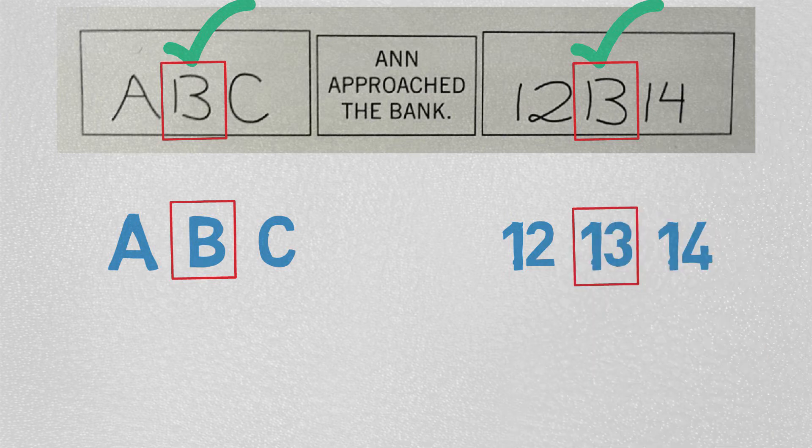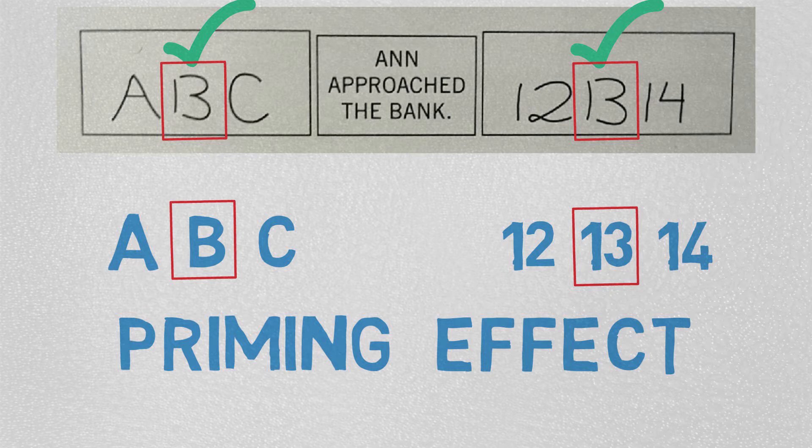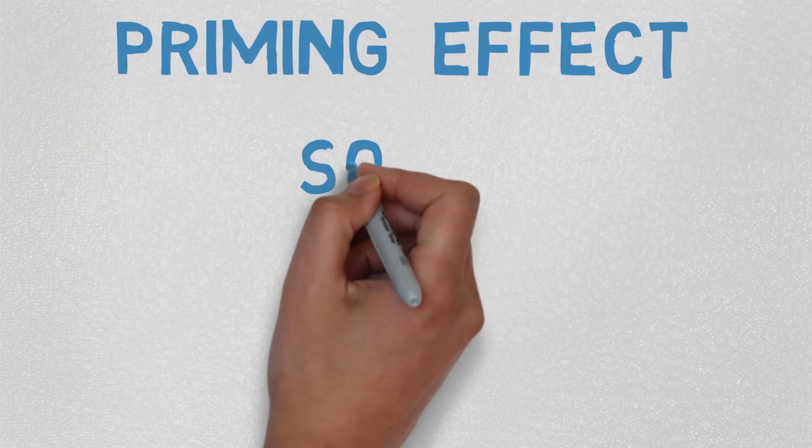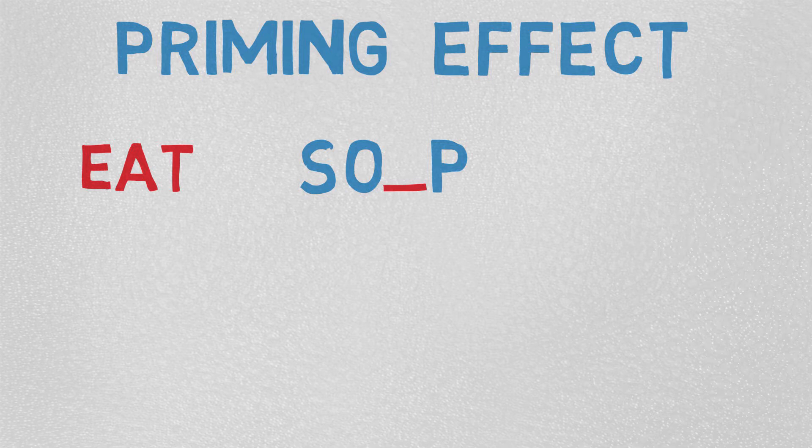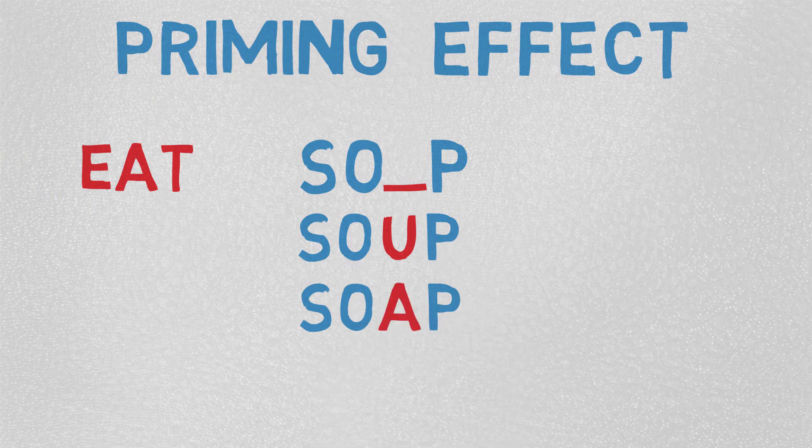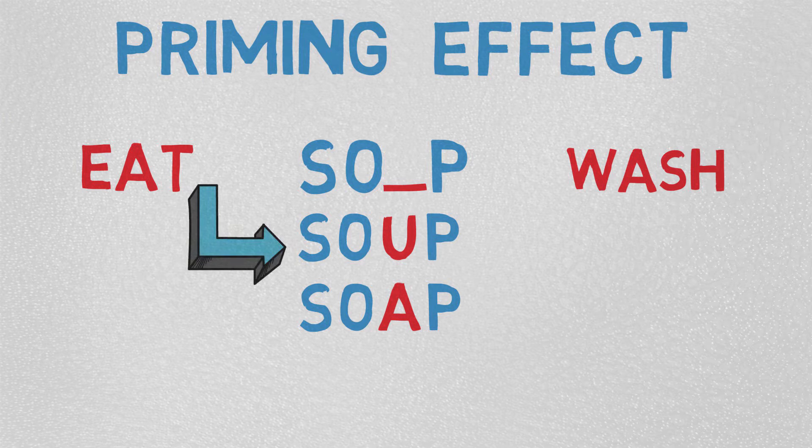One of the reasons is the priming effect. Here's another example of priming effect: fill in the blank. If you have recently seen or heard the word 'eat,' you are more likely to complete the word fragment S-O dash P as 'soup' rather than 'soap.' The opposite would happen if you had just seen 'wash,' and it's because of the priming effect. Here the idea of eat primes the idea of soup, and wash primes soap.